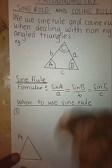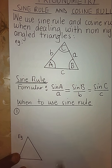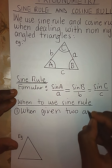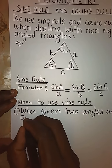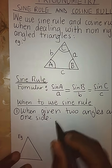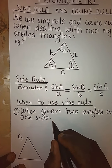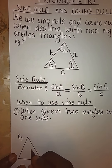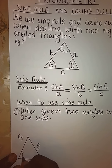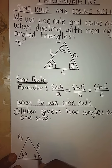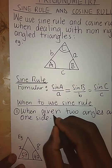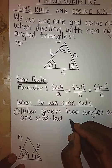We have two important cases under which we can use the sine rule. The first instance is when given two angles and one side. When we have two angles and one side, we shall be able to find another side. For example, if we are given a side of 8, an angle of 57, an angle of 47, and we need to find x.